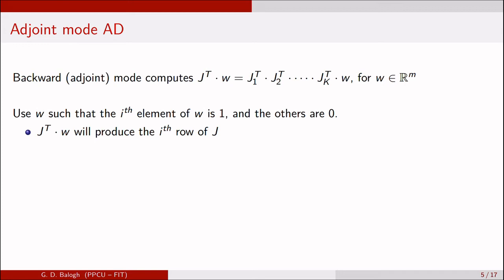So for backward mode AD, we need to choose a vector from the output space. If we choose a vector such that it has only one non-zero element and that element is one, then this matrix-vector product will produce the i-th row of the Jacobian.